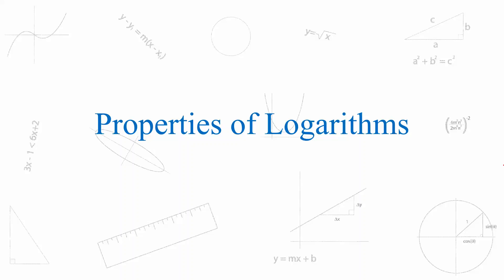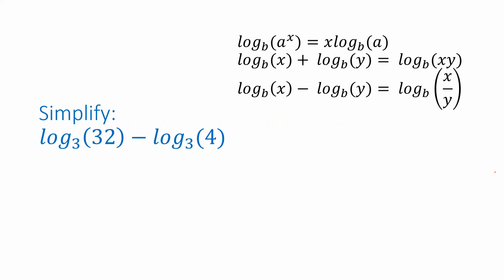Let's look at a few examples of questions that can be answered by taking advantage of properties of logarithms. Here's an example: we want to simplify the expression log base 3 of 32 minus log base 3 of 4. Up in the top right corner we have a list of the most commonly used properties for working with logarithms. We have a difference — one logarithm minus another — and both logarithms have the same base of 3.